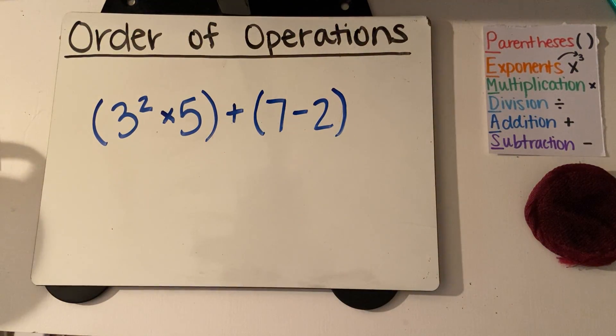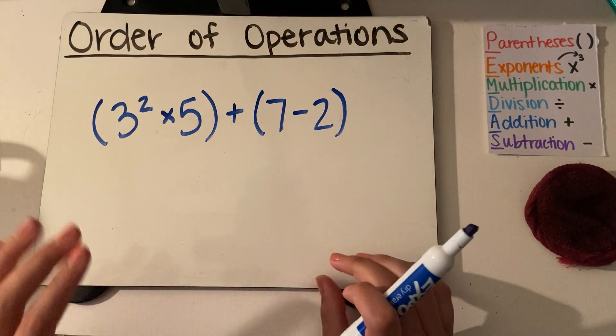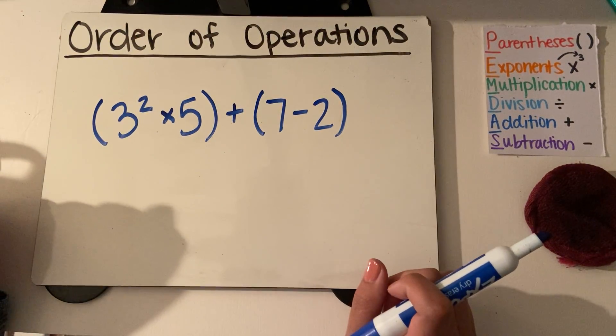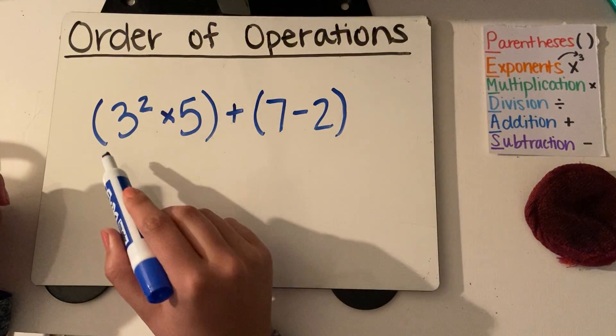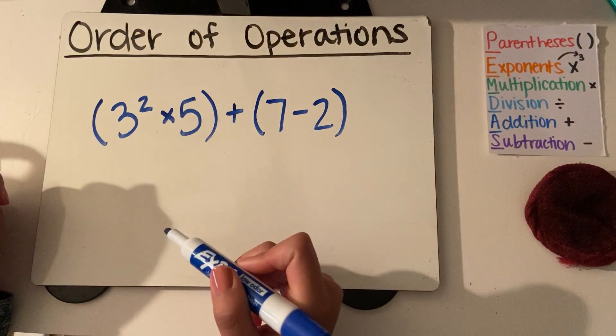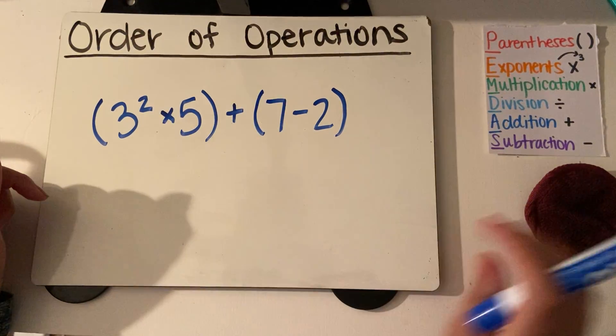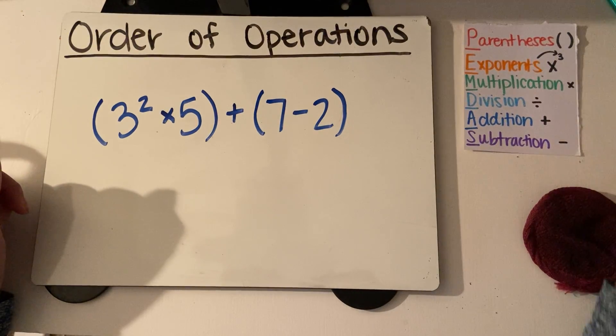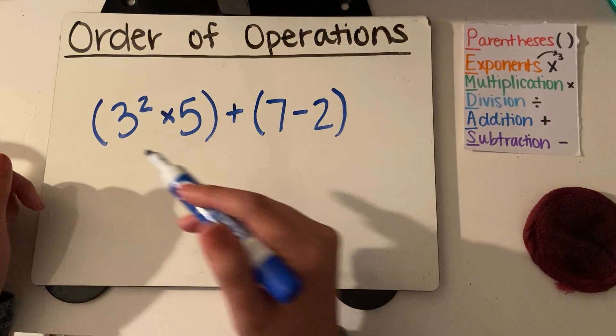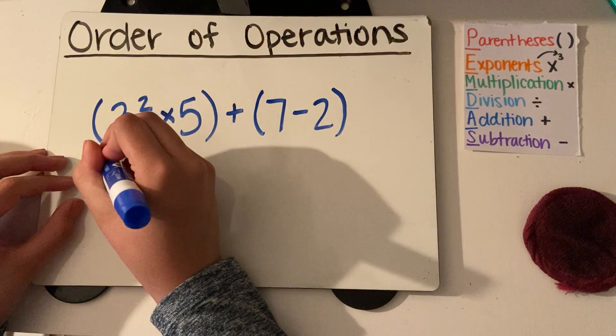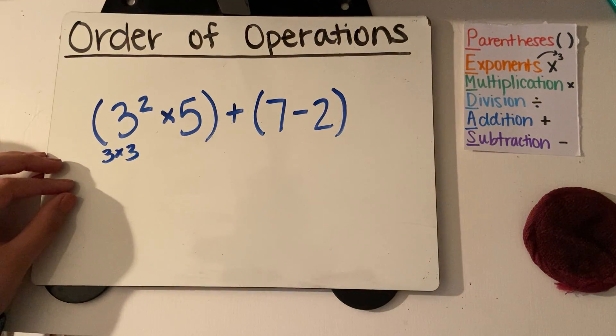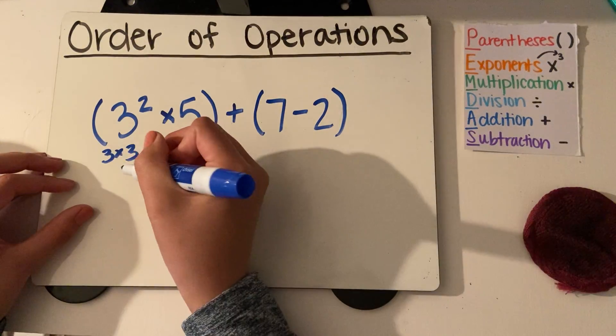So something I don't know that I stressed a lot in the first video from Monday is that we're still going to work from left to right, just like we would if we were reading a book. So we're going to solve what's in this parentheses first. Within my parentheses, I notice that there's an exponent, and that's my next step. So I know that 3 squared is also 3 times 3. It's not 3 times 2, it's 3 times 3, and I get 9.